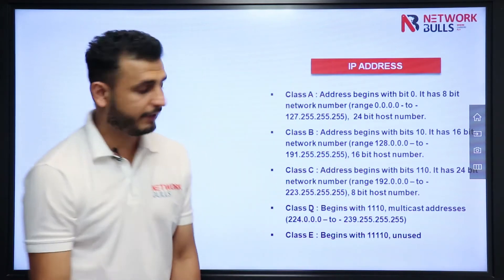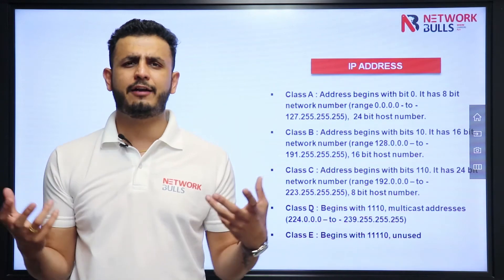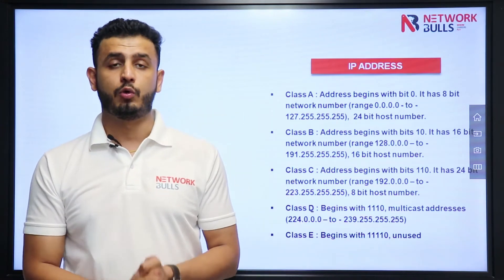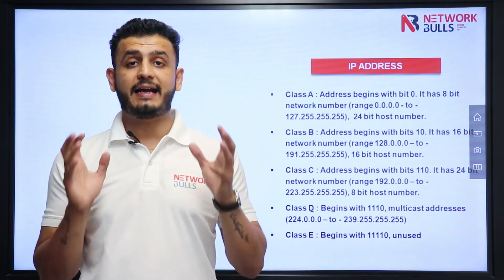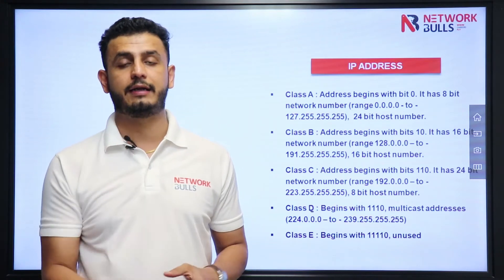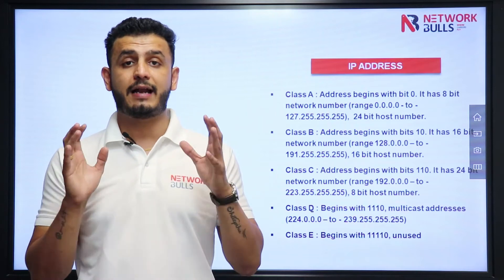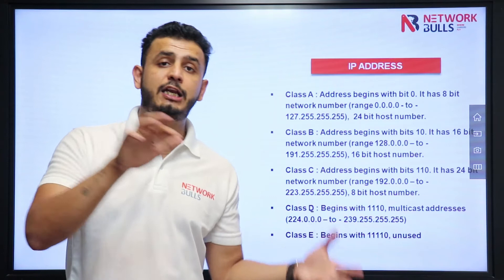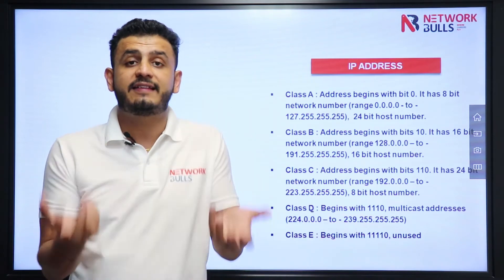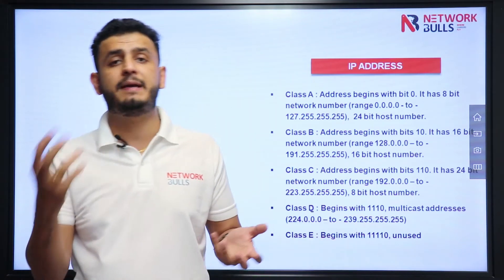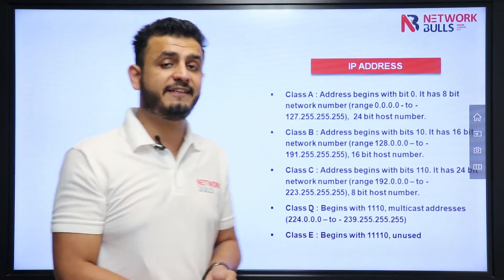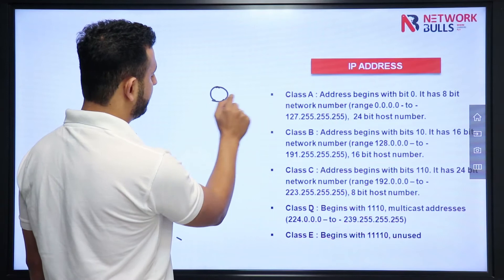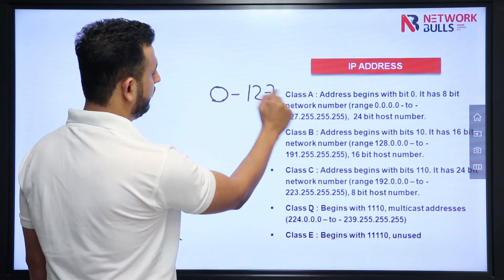The question is: how do we know which class an IP address belongs to? We categorize it based on the first octet. The value in the first octet tells us whether the IP address belongs to Class A, B, C, D, or E. If the value in the first octet is from 0 to 127, it belongs to Class A.